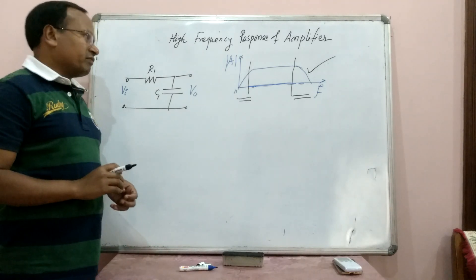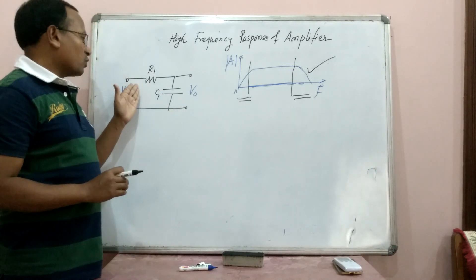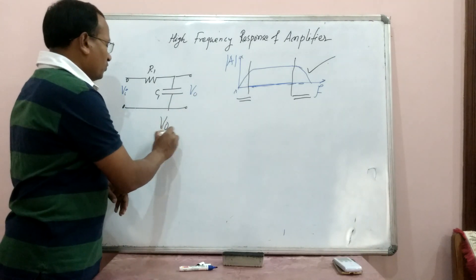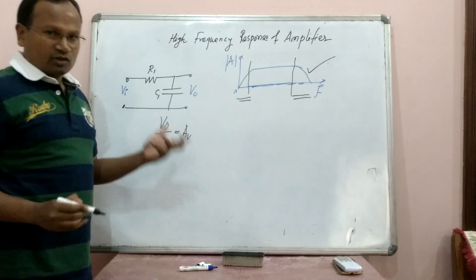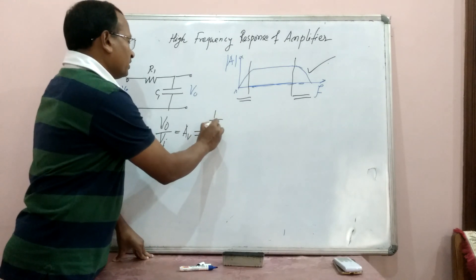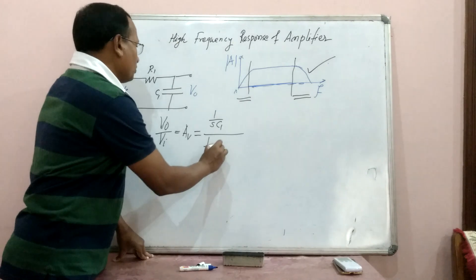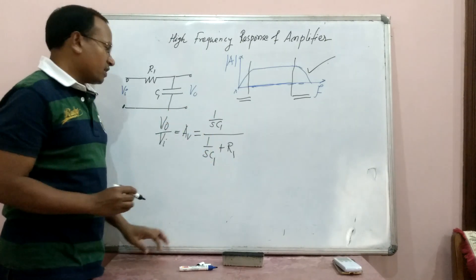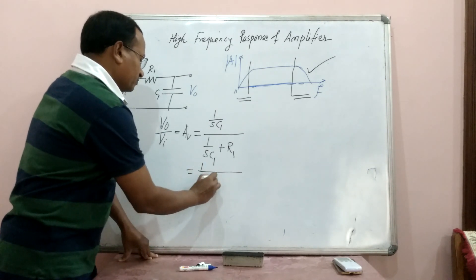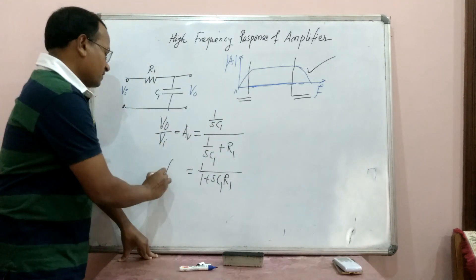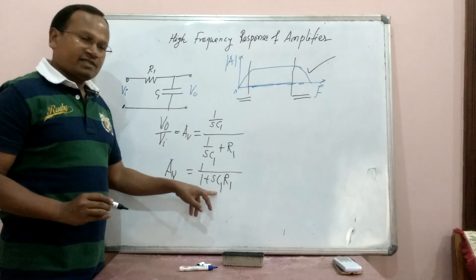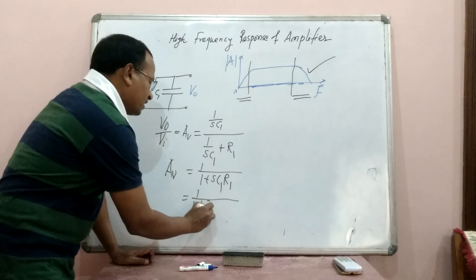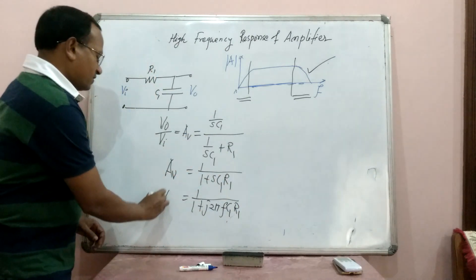When we draw the equivalent circuit of an amplifier for high frequency response, the circuit consists of R1 and C1 with an input signal and an output signal. The gain AV equals VO divided by VI. We can write this as (1/SC1) divided by (1/SC1 + R1), working in the Laplace domain. Simplifying, it becomes 1 divided by (1 + SC1·R1), where S = jω = j·2πF.